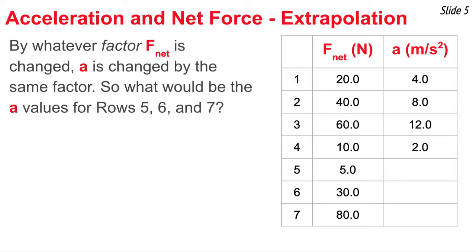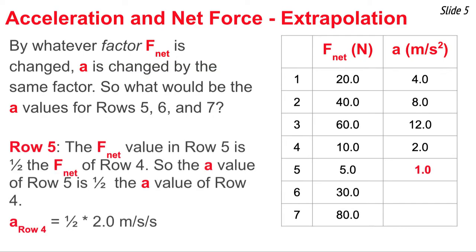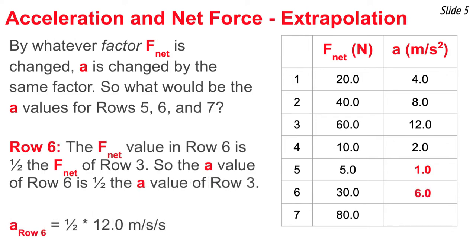Looking at row 5, the F_net of that row is one-half the F_net of row 4, so the acceleration of row 5 is going to be one-half the acceleration of row 4. We take the 2 meters per second squared of row 4 and halve it. For row 6, its F_net is one-half the value of row 3, so the acceleration for row 6 must be one-half the acceleration of row 3. We take the 12 meters per second squared of row 3 and halve it.